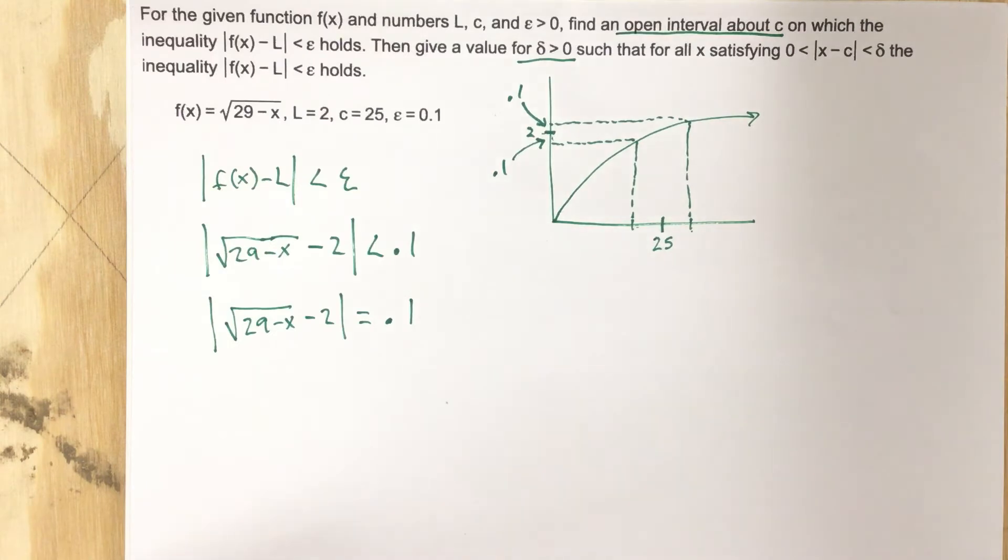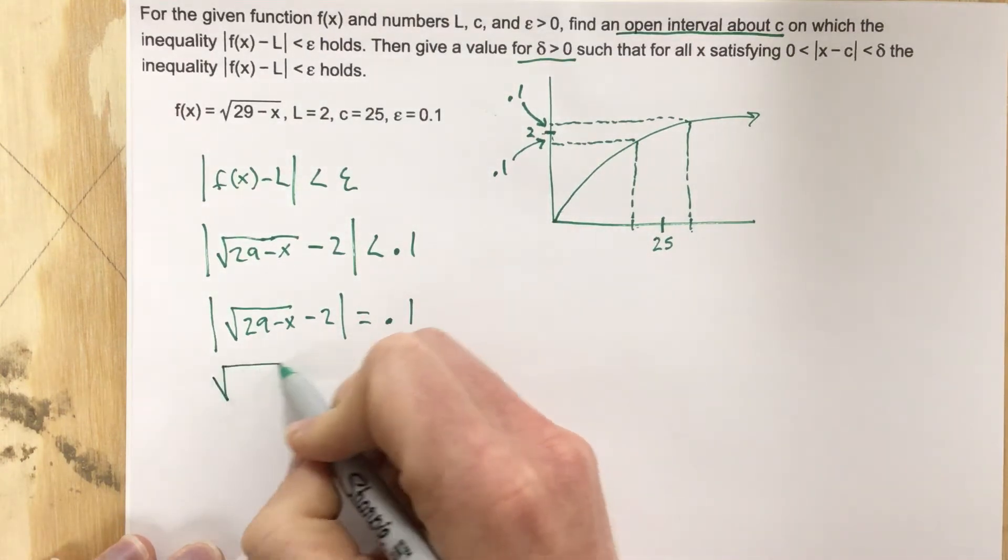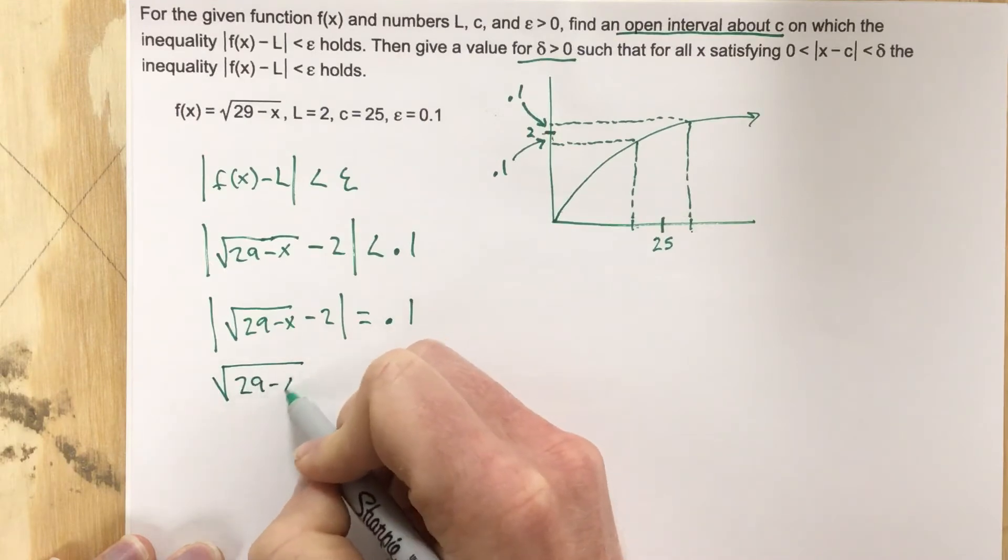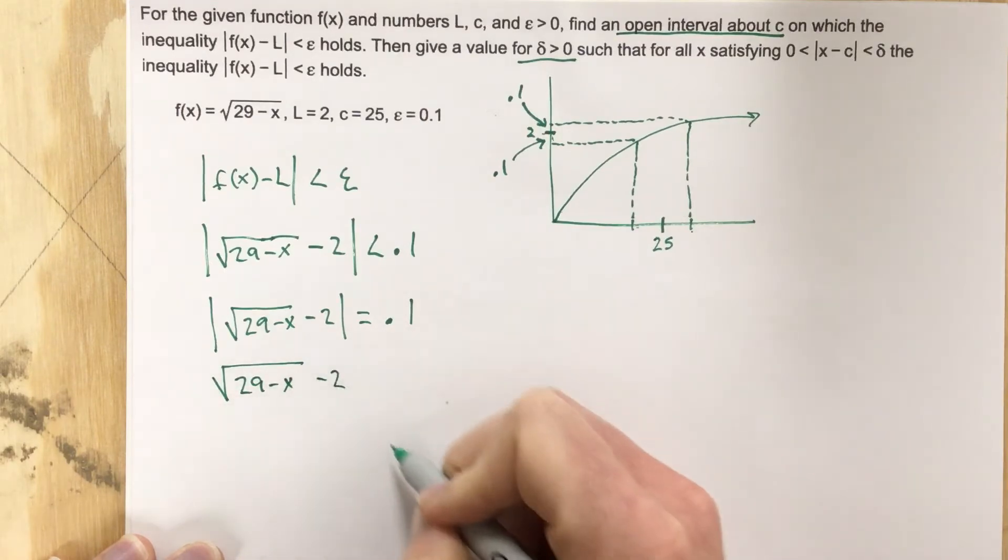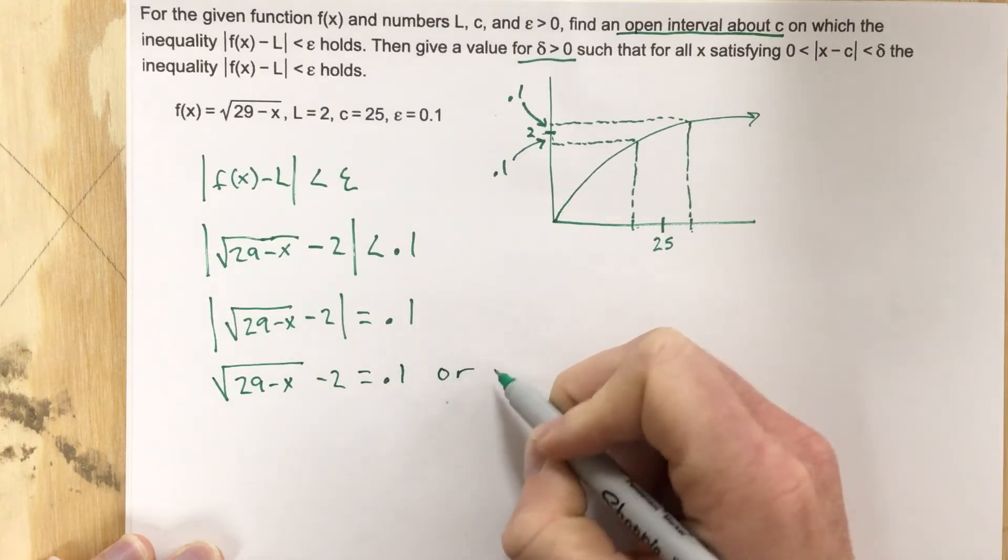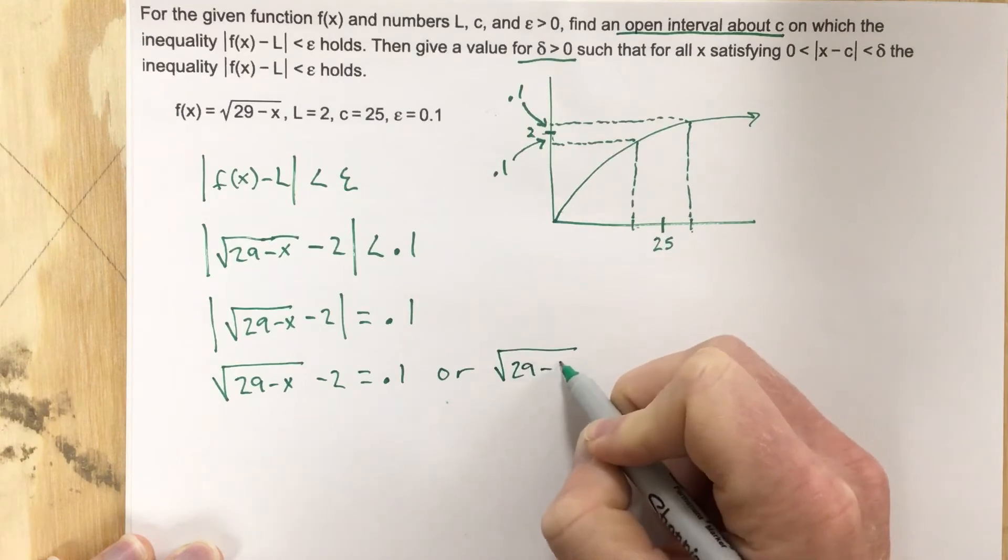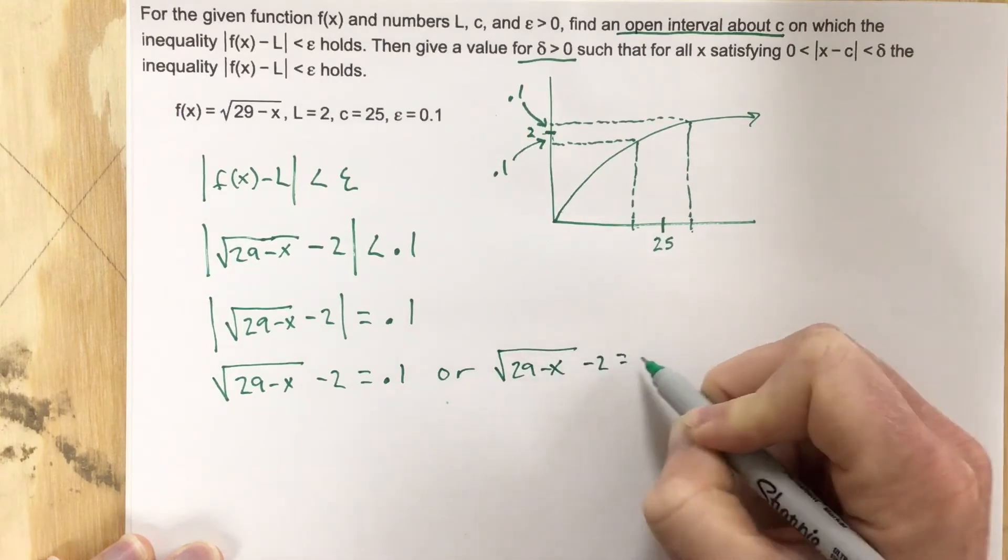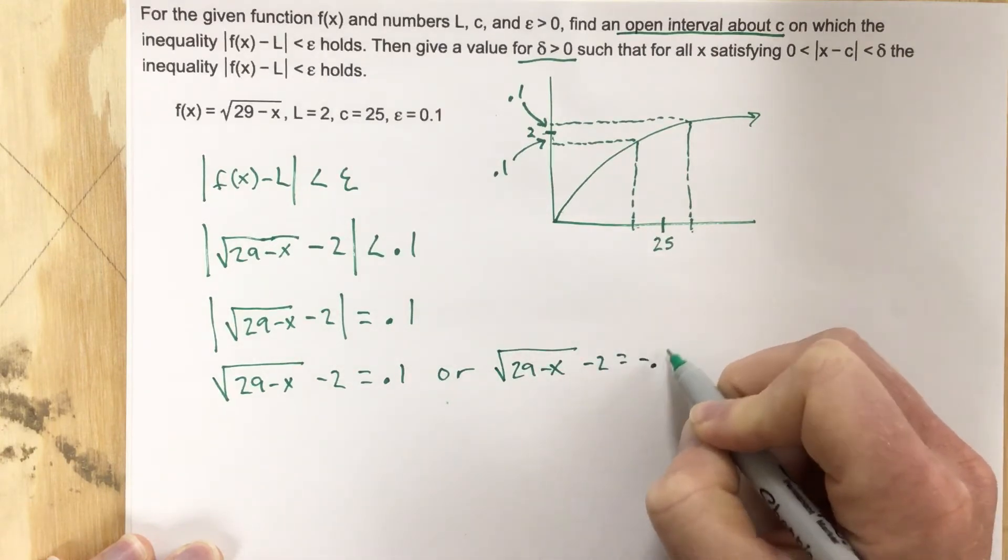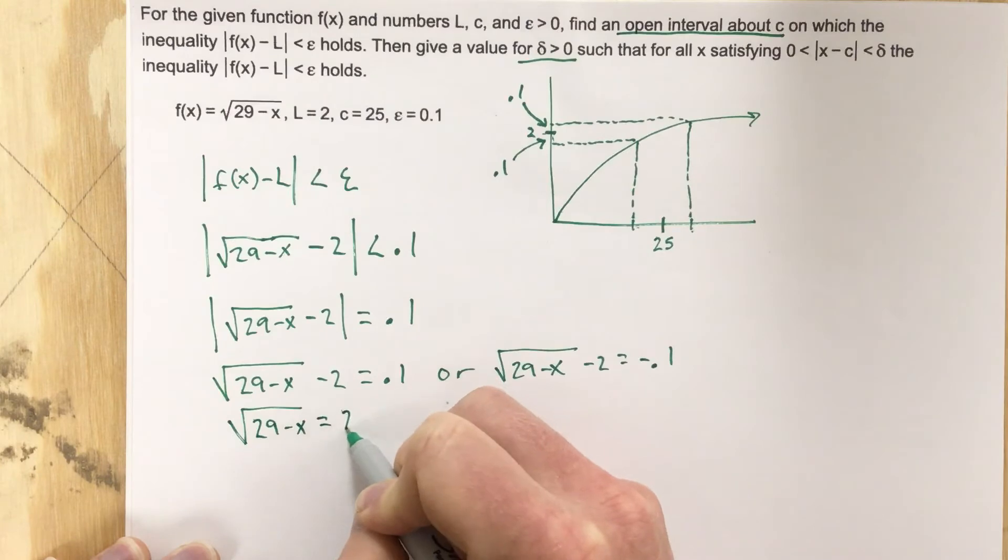So we're going to say √(29-x) - 2 = 0.1, or √(29-x) - 2 = -0.1. This will give you √(29-x) = 2.1,